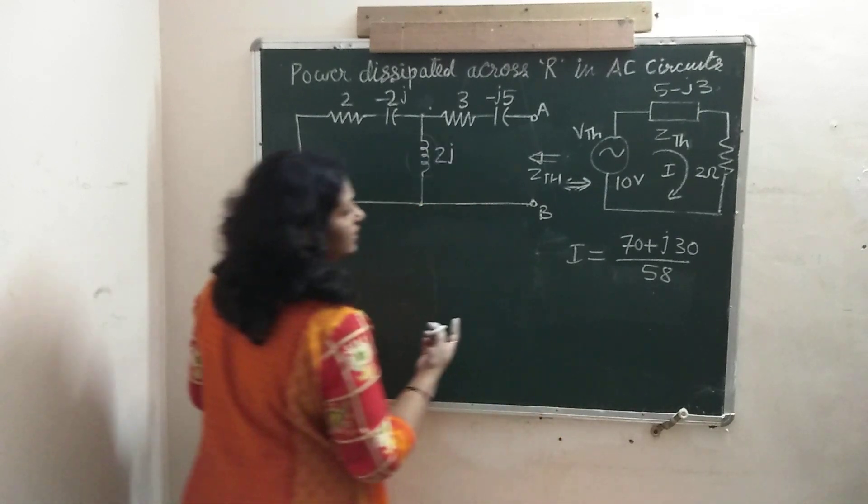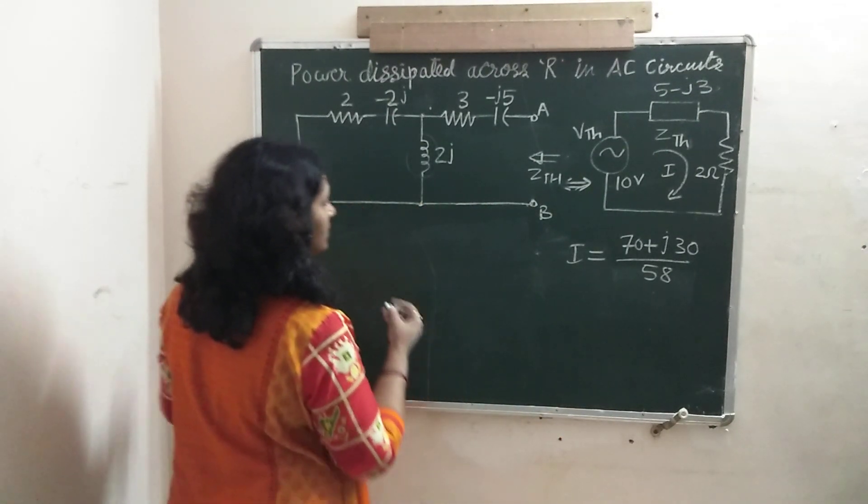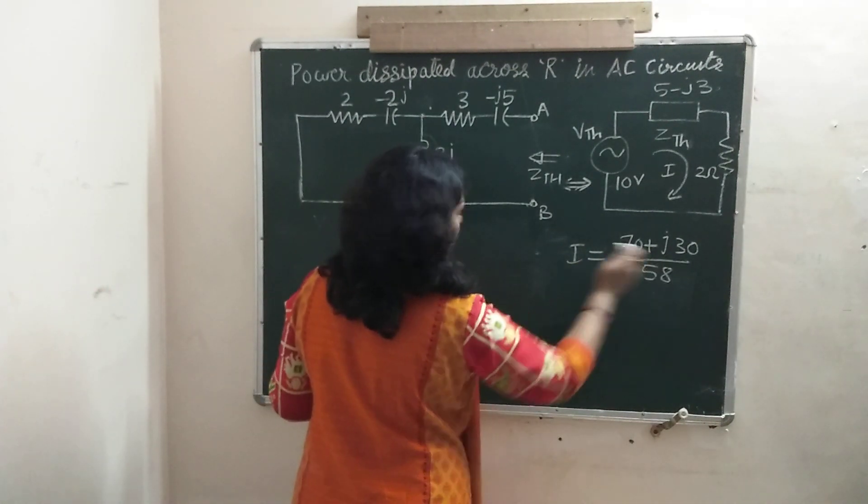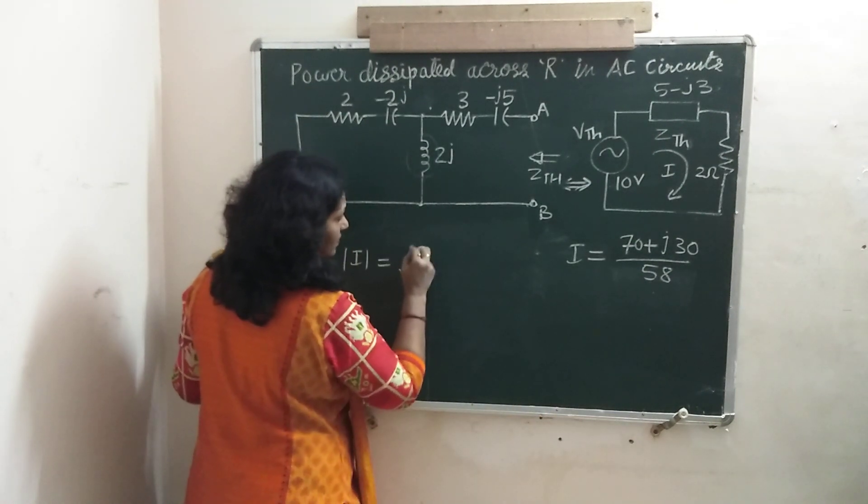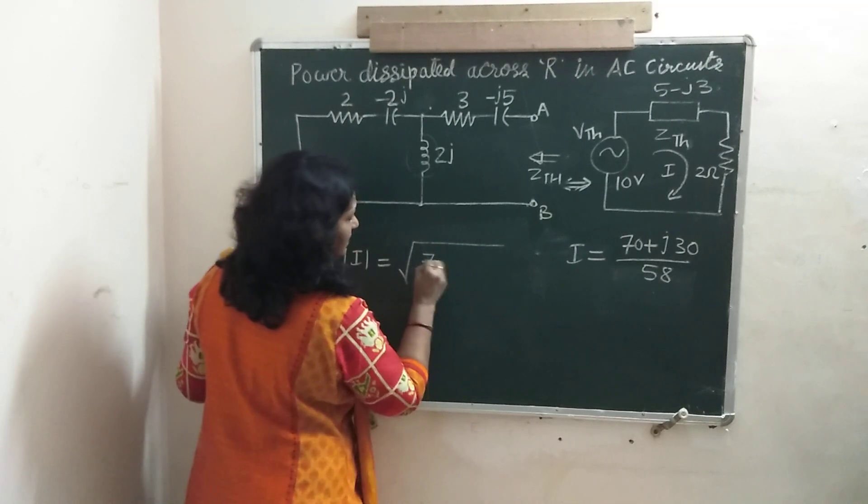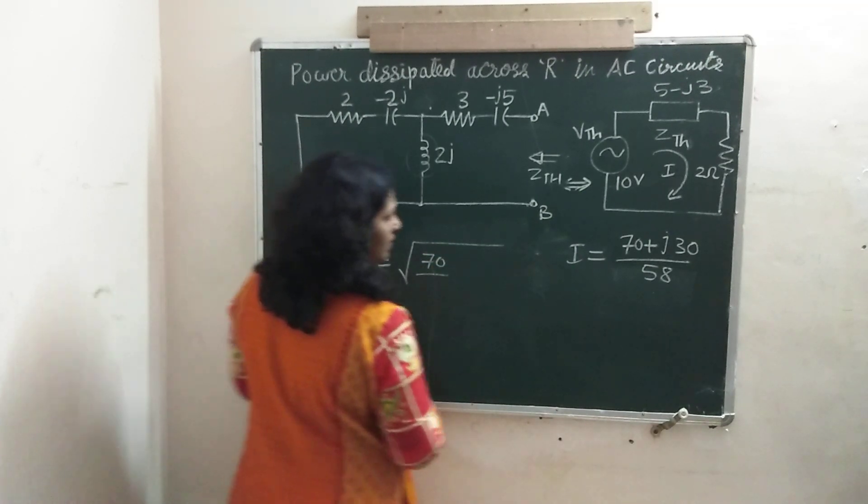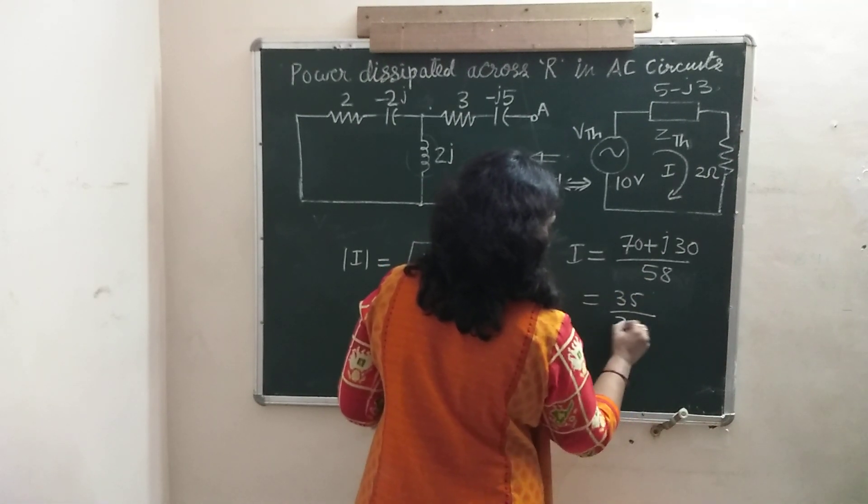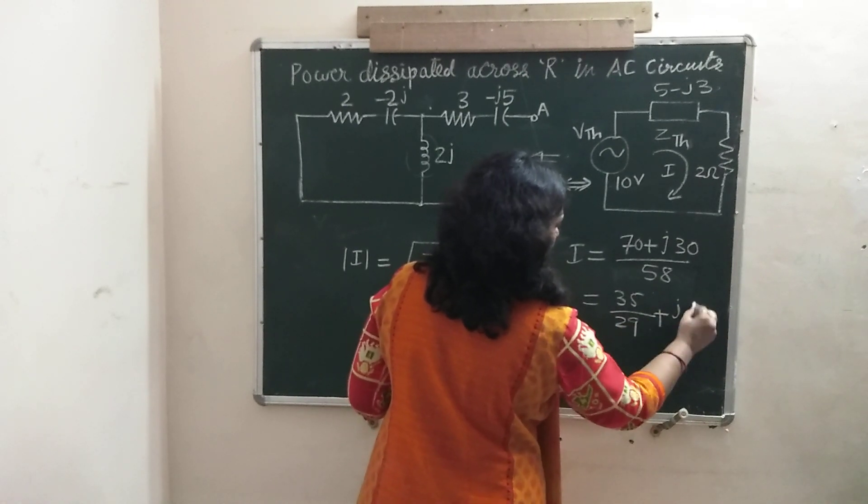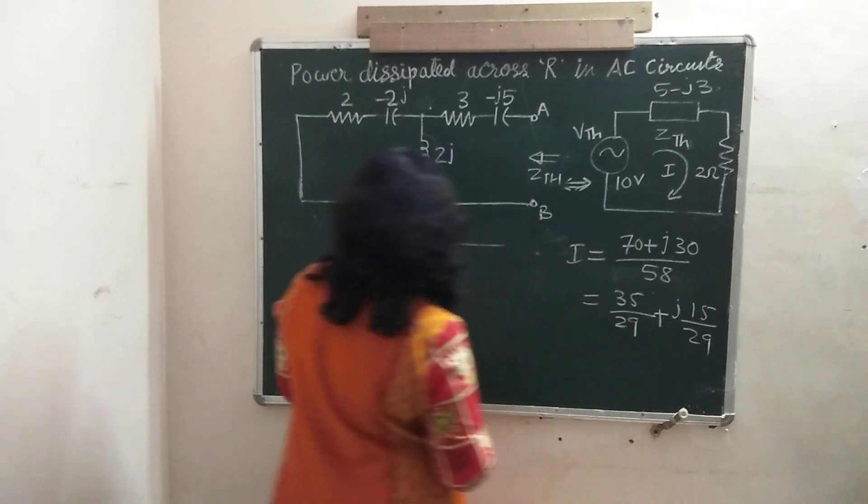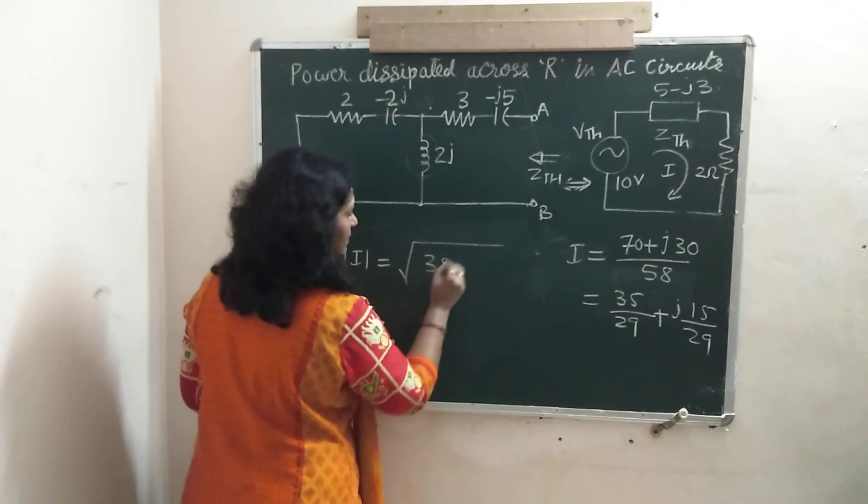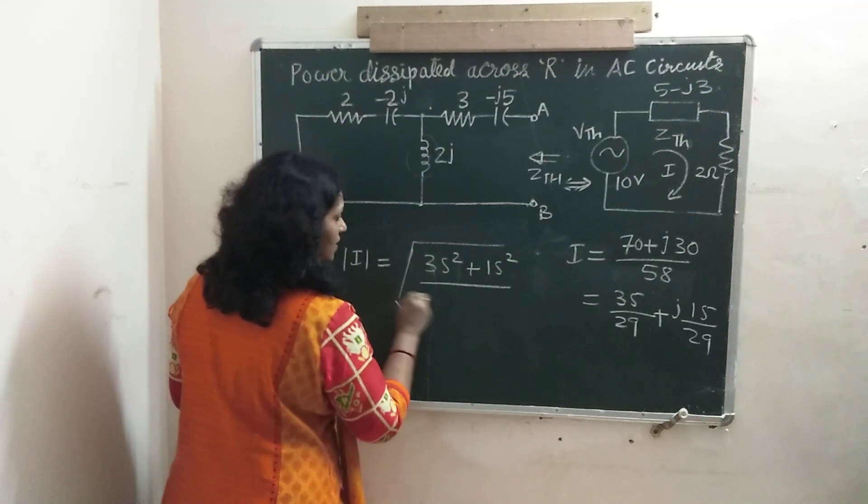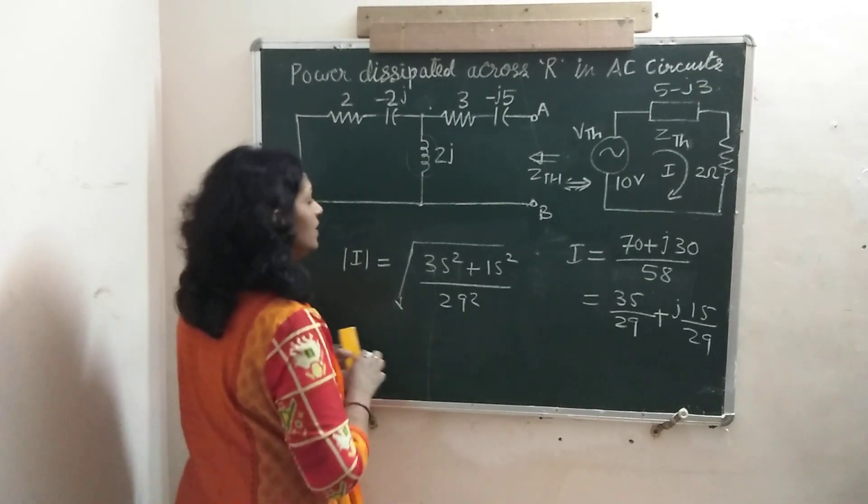Now, we will rationalize or convert this into standard form by multiplying 7 plus J3 in numerator and denominator. This will become 49 plus 9, 49 plus 9 that is 58. Multiply this. This will become 70 plus J30 divided by 58. This is our current in the circuit. Now, we can find the RMS value of this current, simply by squaring these terms and taking root. That is 75 by 58.